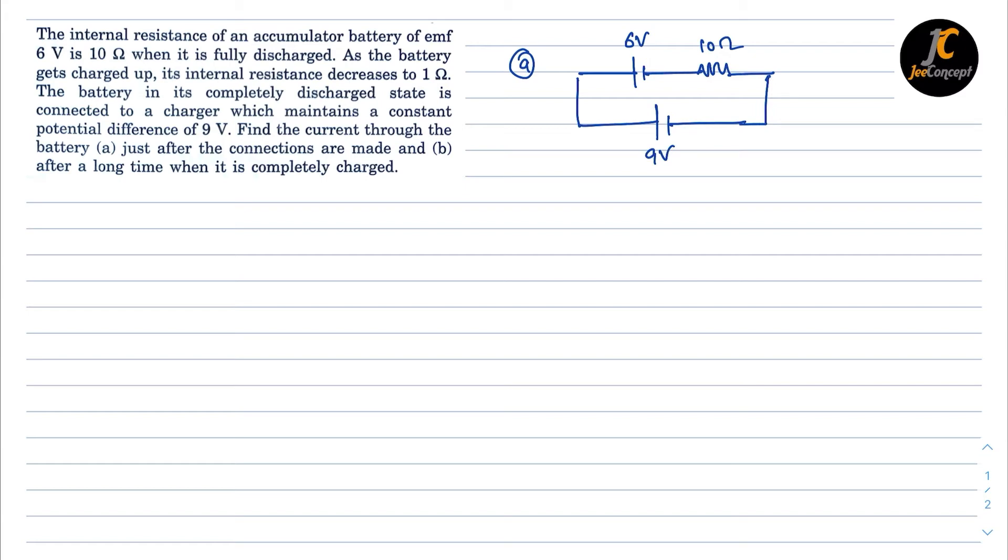In this particular scenario, net voltage in the circuit is going to be 9 minus 6, that is 3 volt, and the resistance of the circuit is 10 ohm.